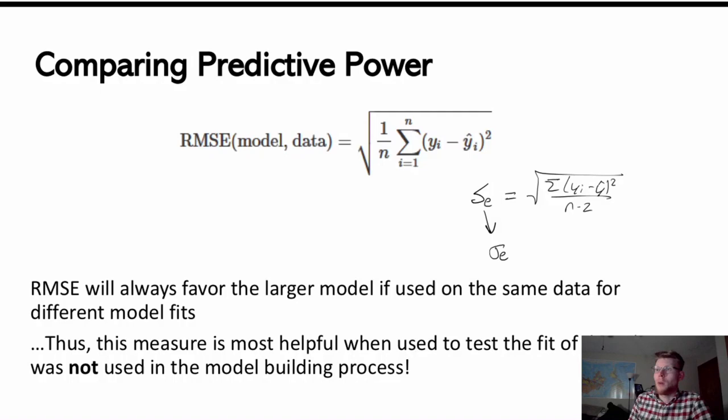One other thing is that the RMSE is always going to favor the larger model if we're looking at the same data. If I have some set of data and different model options, every time I add a predictor, my model is going to be fitting a little bit more. My RMSE is always going to be going down as I add another predictor because if I add more information, I can only get better at predicting the response with the same set of data.